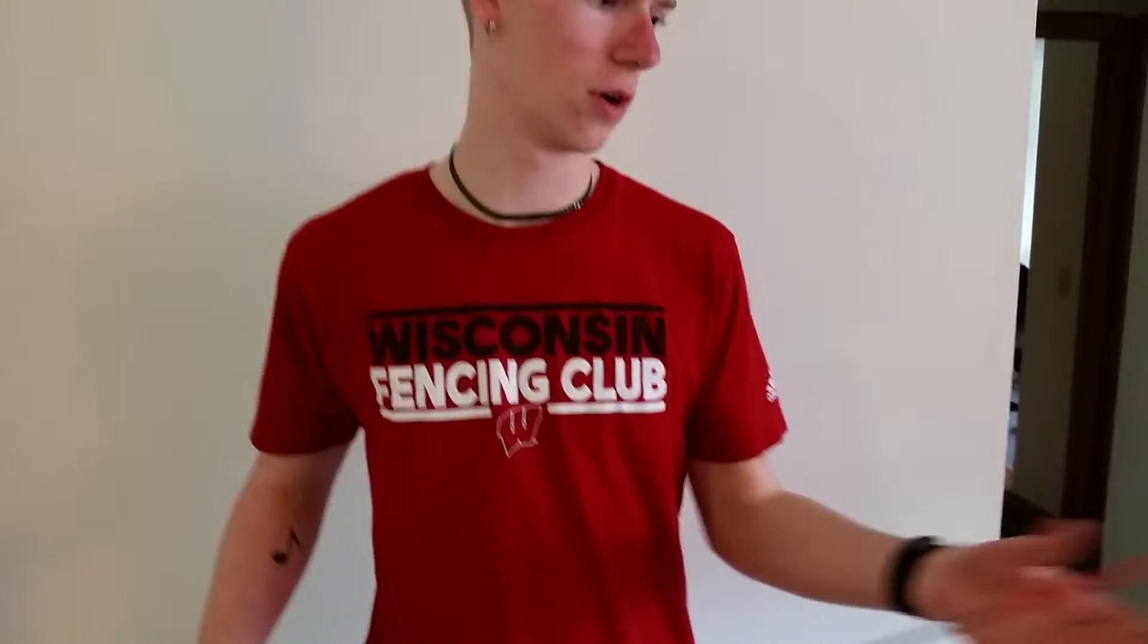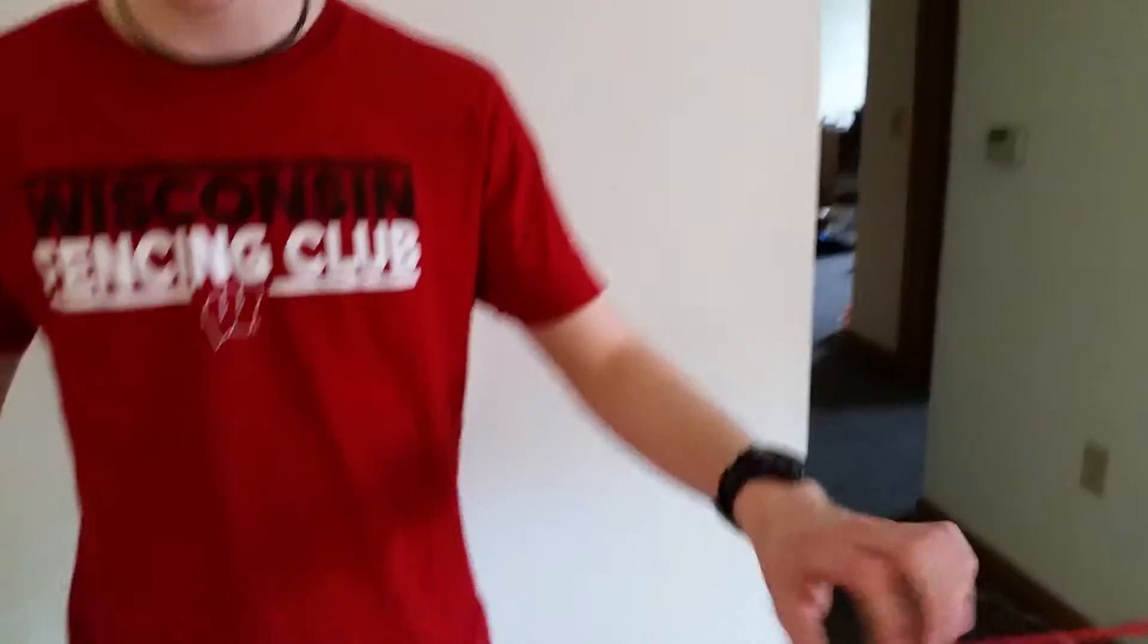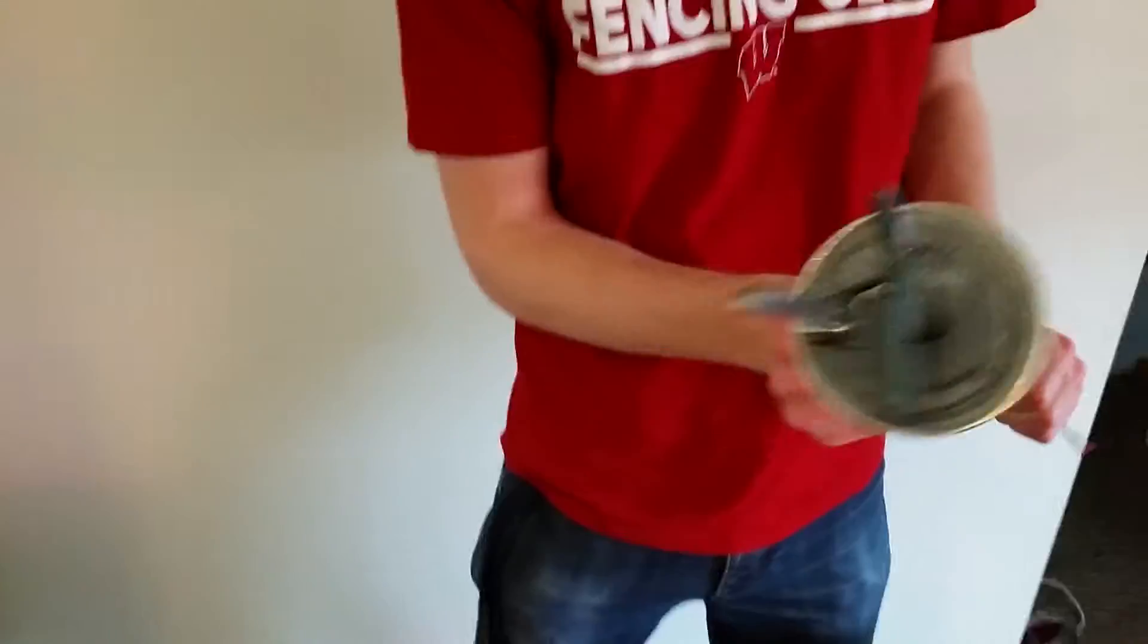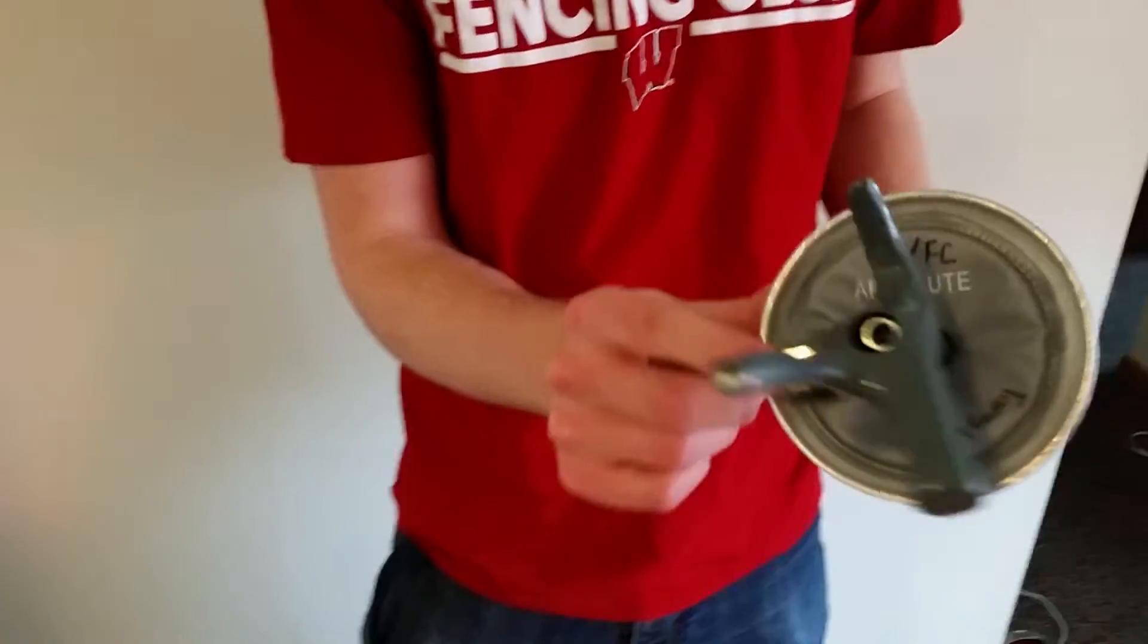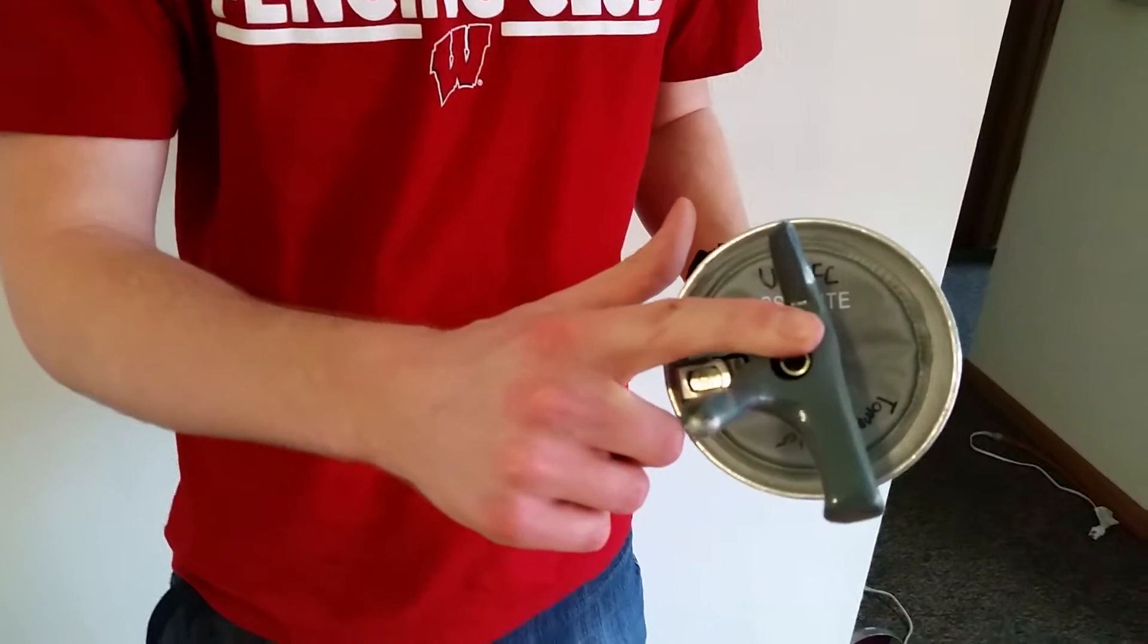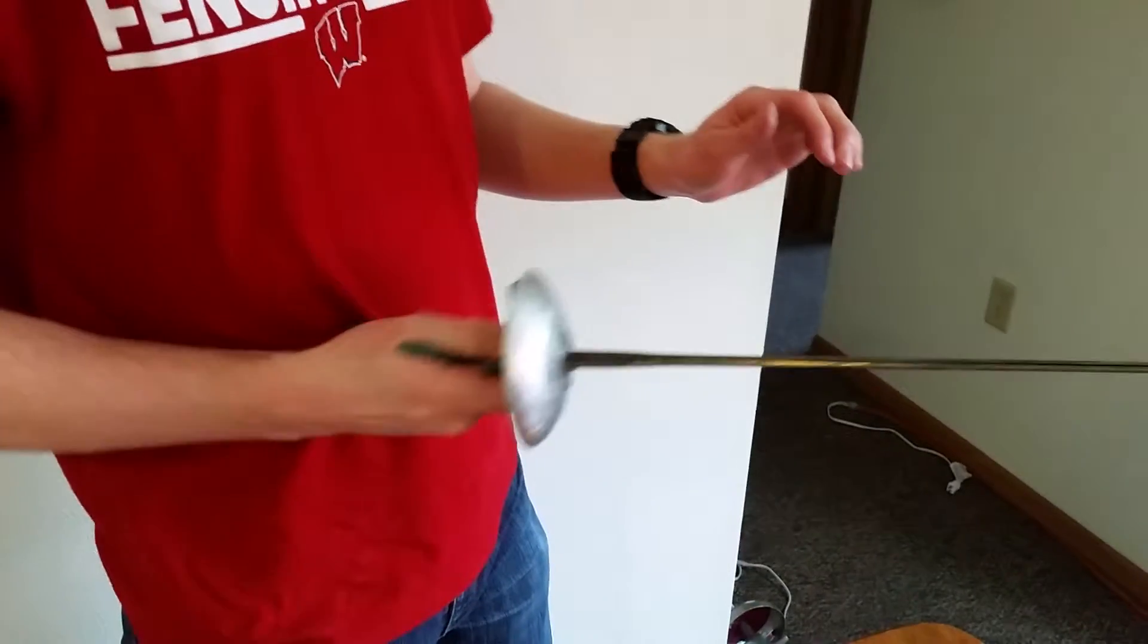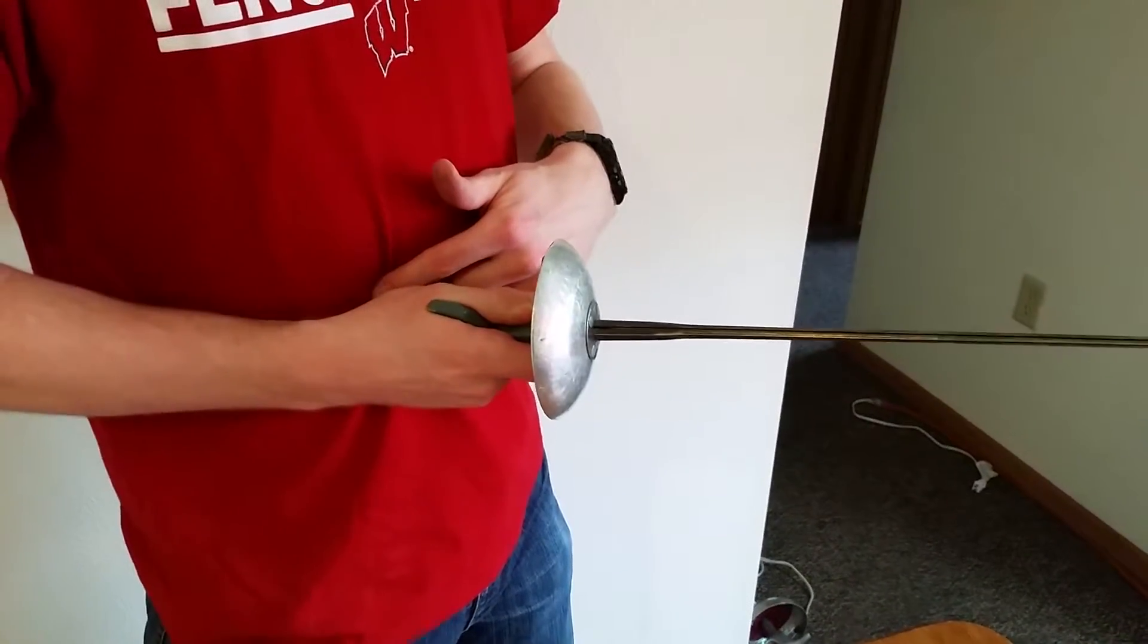So starting with the different elements of a foil, we've got a tip under some tip tape here which I'll get to in a minute, we've got the blade, we've got our guard, we've got a bayonet socket, more on that in a minute, and an insulated grip.